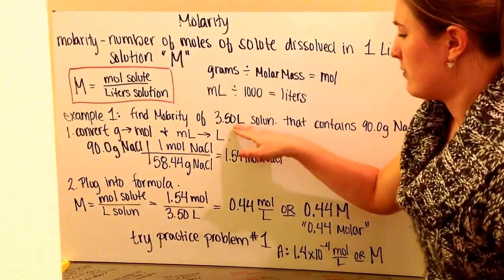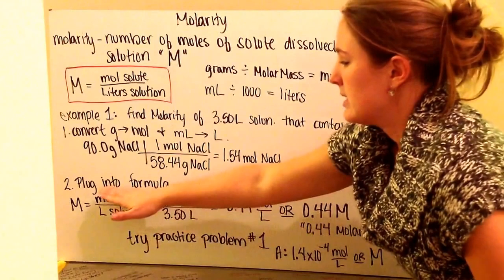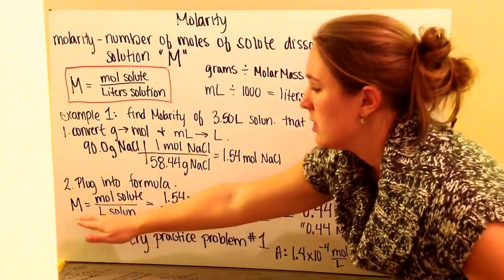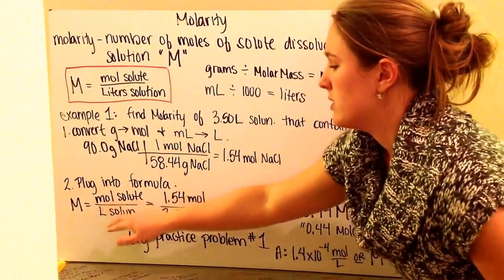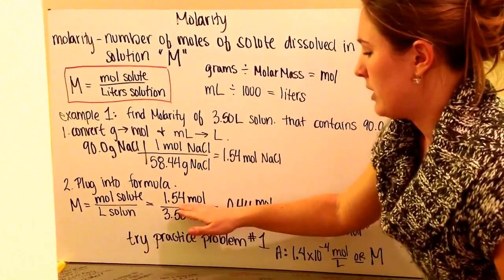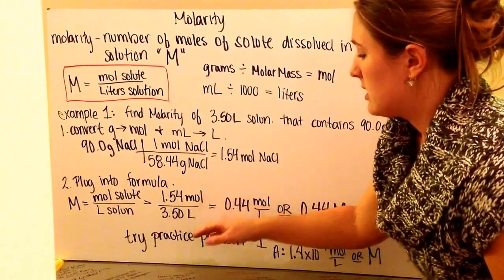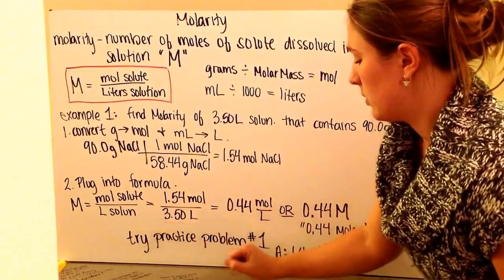I am given my volume in liters already, so I don't need to do anything for that. Next, I plug into my formula. Molarity equals moles of solute divided by liters of solution. I have 1.54 moles of sodium chloride dissolved into 3.50 liters of solution.